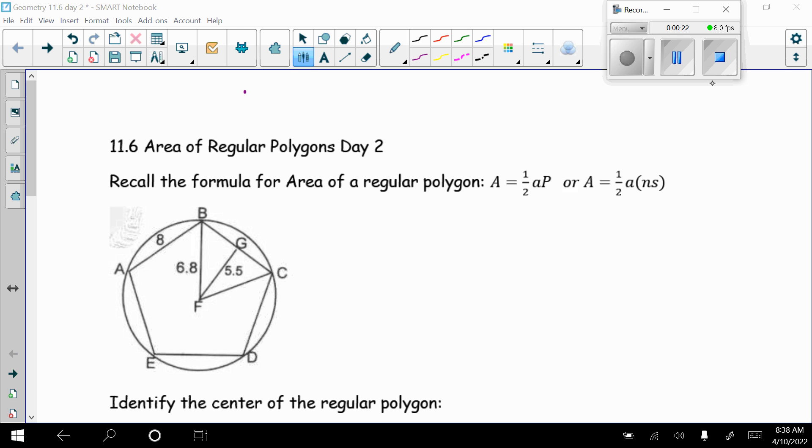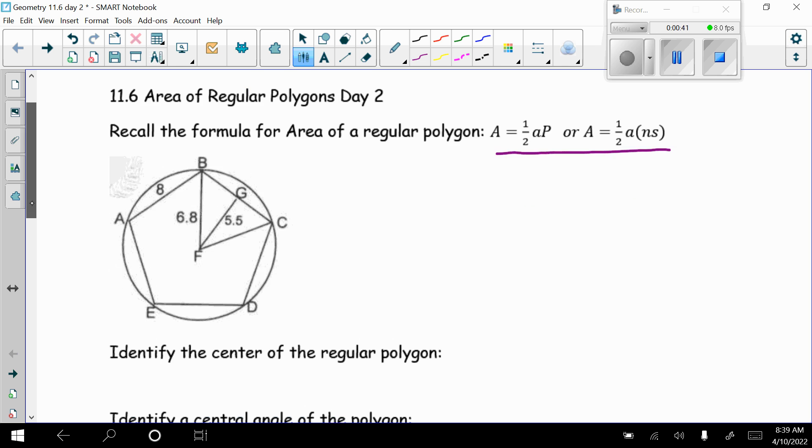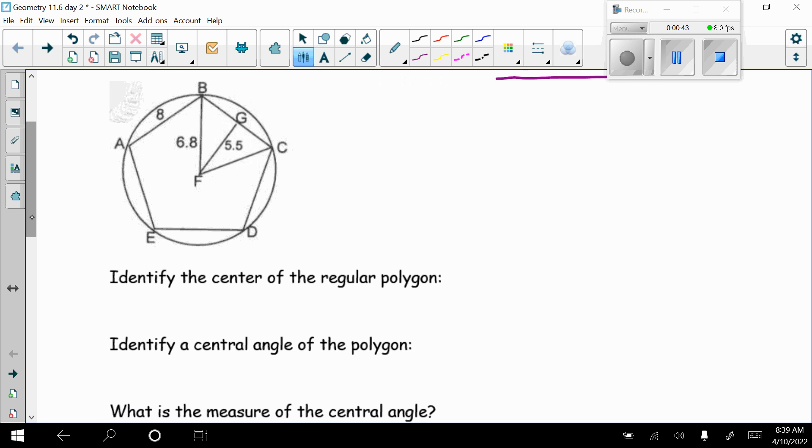Remember that yesterday we also learned to find the area of a regular polygon by finding the area of each isosceles triangle and then multiplying it by how many isosceles triangles made up the polygon. But these formulas take less work and are quicker. So we have this picture. We have ABCDE inscribed inside the circle and we're just going to identify some things.